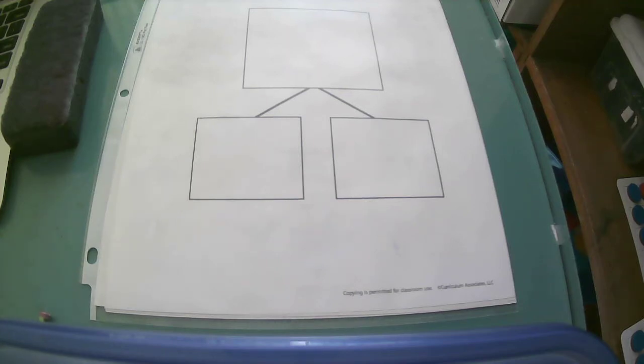Today for our math strategies video we're going to be talking about understanding the equal sign. This is from Ready Math lesson 10. We'll be working with picture models, number bonds, and 10 frames to show equal amounts on both sides of the equal sign. Remember that the equal sign means the same as.